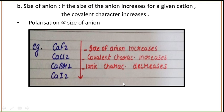The next factor is the size of the anion. If the size of the anion increases for a given cation, the covalent character will increase — meaning polarization is directly proportional to the size of the anion. When you move down Group 17, the halogen group, the size of the anion increases. If the size of the anion increases, polarization increases, which means covalent character will increase, because polarization means checking the covalent character. If covalent character increases, ionic character will decrease.